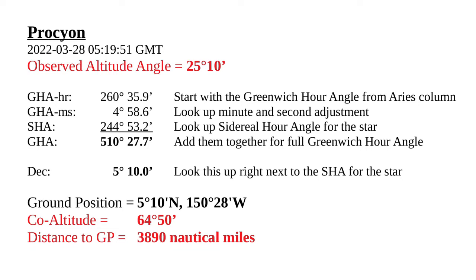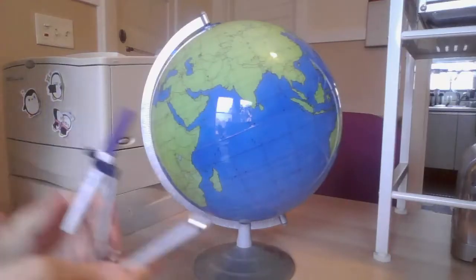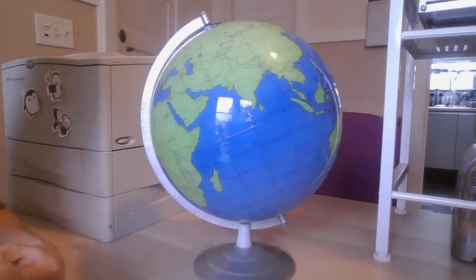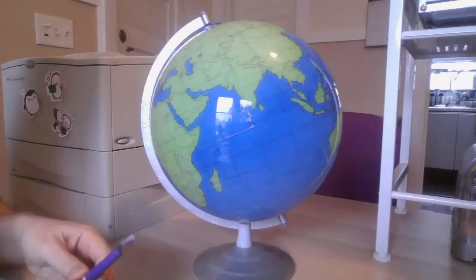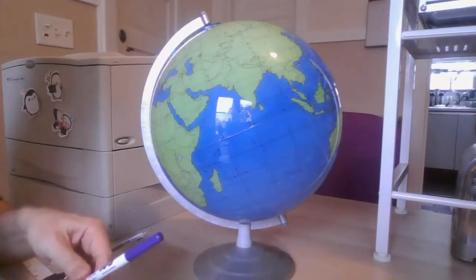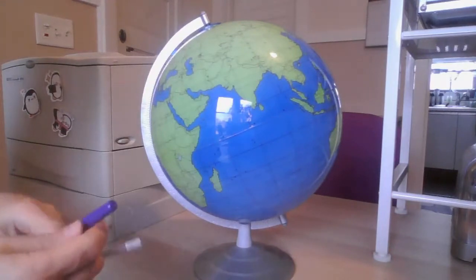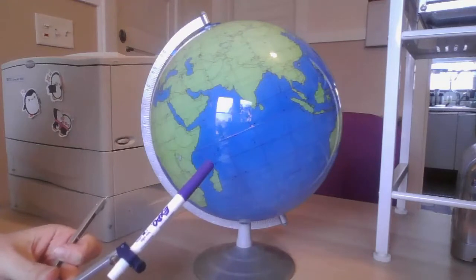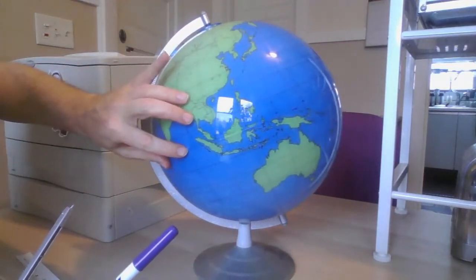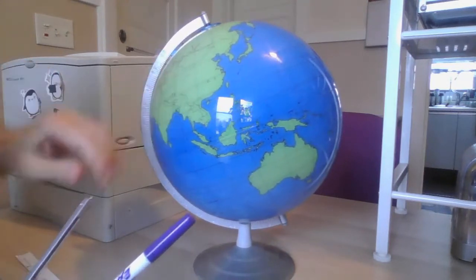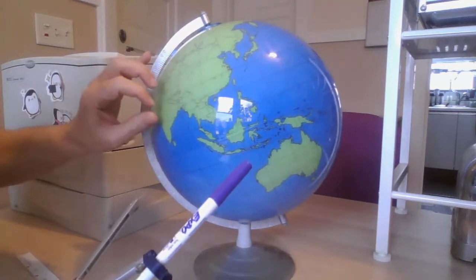The first star we're going to work with is Procyon, which has an altitude angle adjusted for refraction of 25 degrees 12 minutes, giving us a co-altitude of pretty close to 65 degrees. We'll size our drafting compass to that. The way we get 65 degrees is by using the equator as our scale, because 60 nautical miles per degree holds exactly at the equator, so that works very nicely as a scale for us.